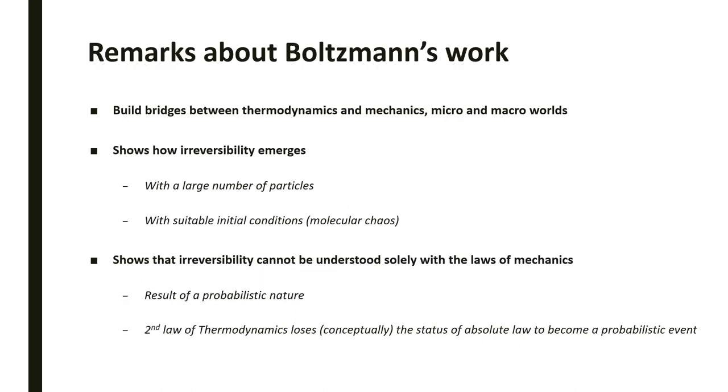After this, we are ready to conclude this presentation. Just a few remarks about Boltzmann's work. We saw that it builds bridges between thermodynamics and mechanics, between micro and macro worlds. It also shows how irreversibility emerges, and that we need a large number of particles and some suitable initial conditions like molecular chaos. This great conclusion is that irreversibility cannot be understood solely with the laws of mechanics. It's not a deterministic law, it's the result of a probabilistic nature. So the second law of thermodynamics loses conceptually the status of absolute law and now becomes a probabilistic event.